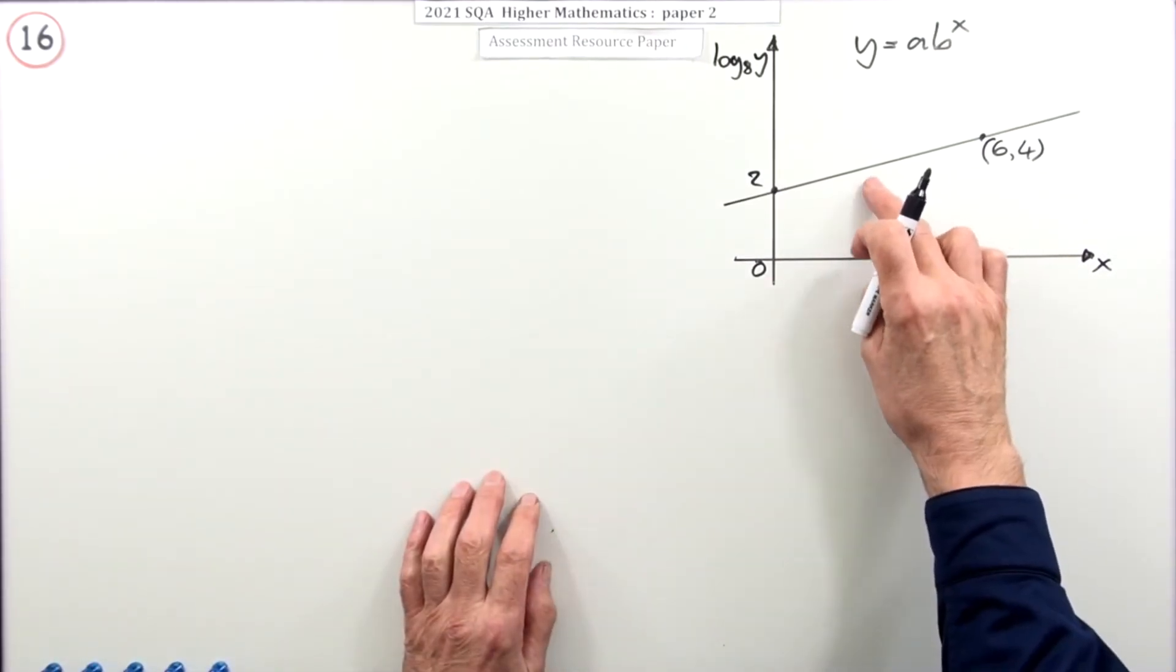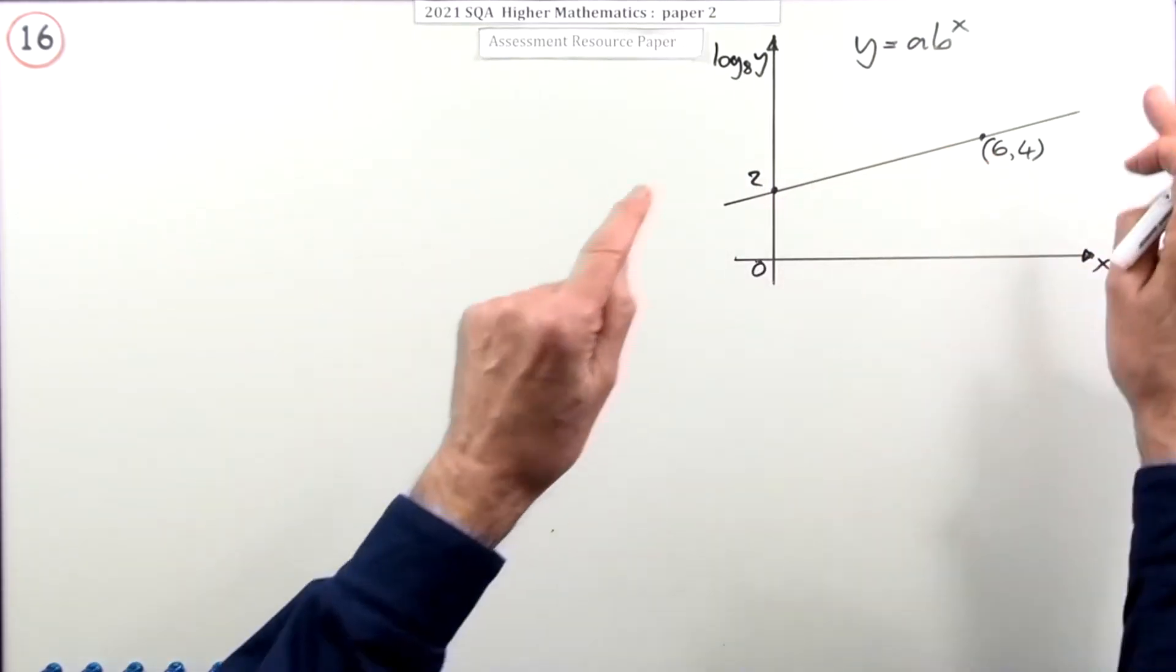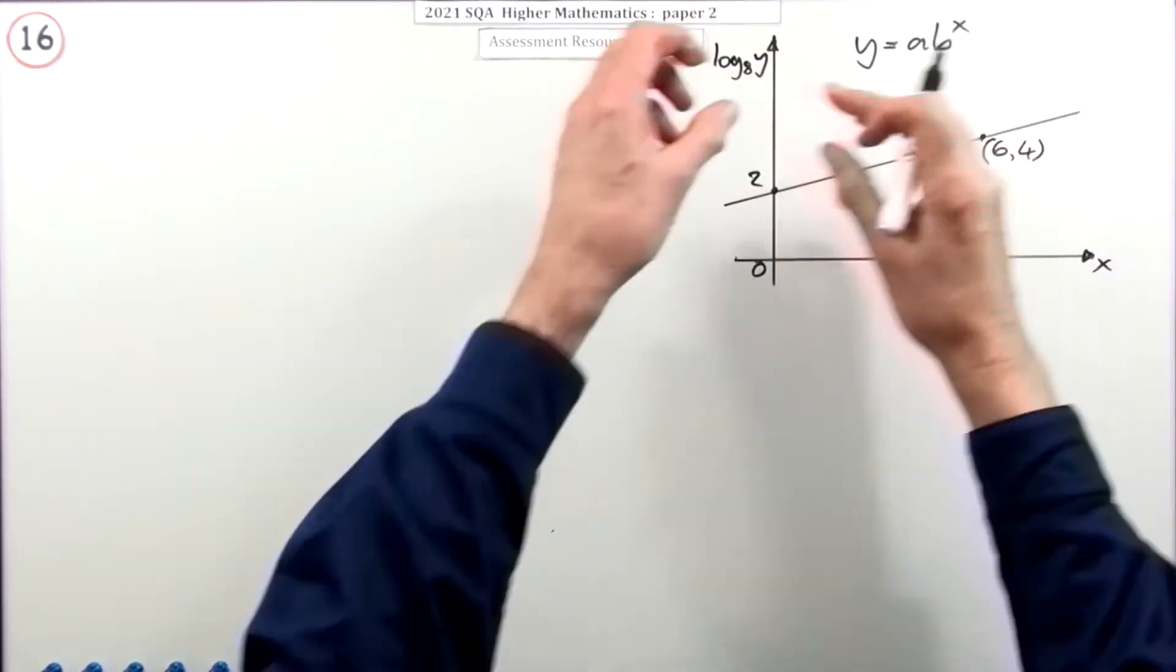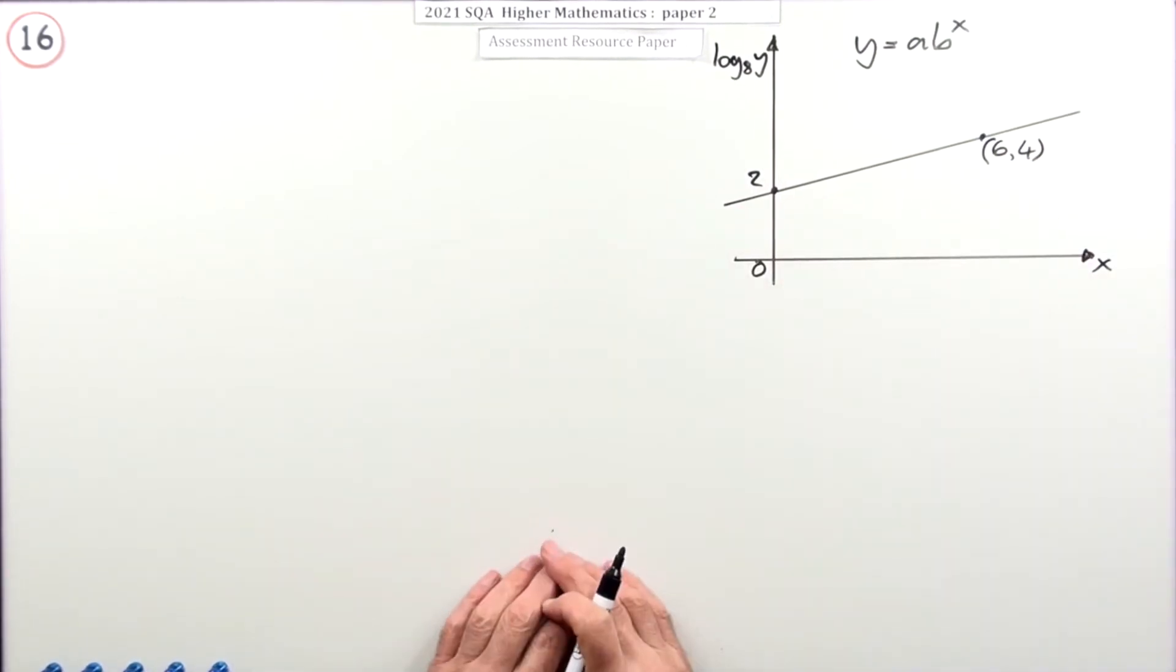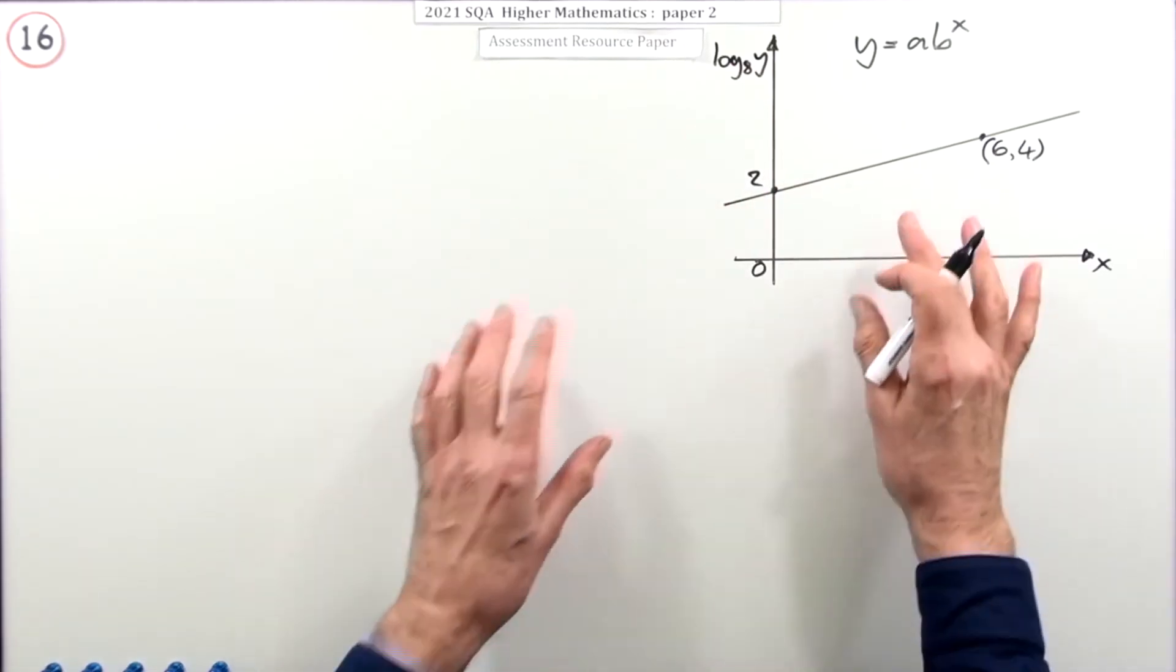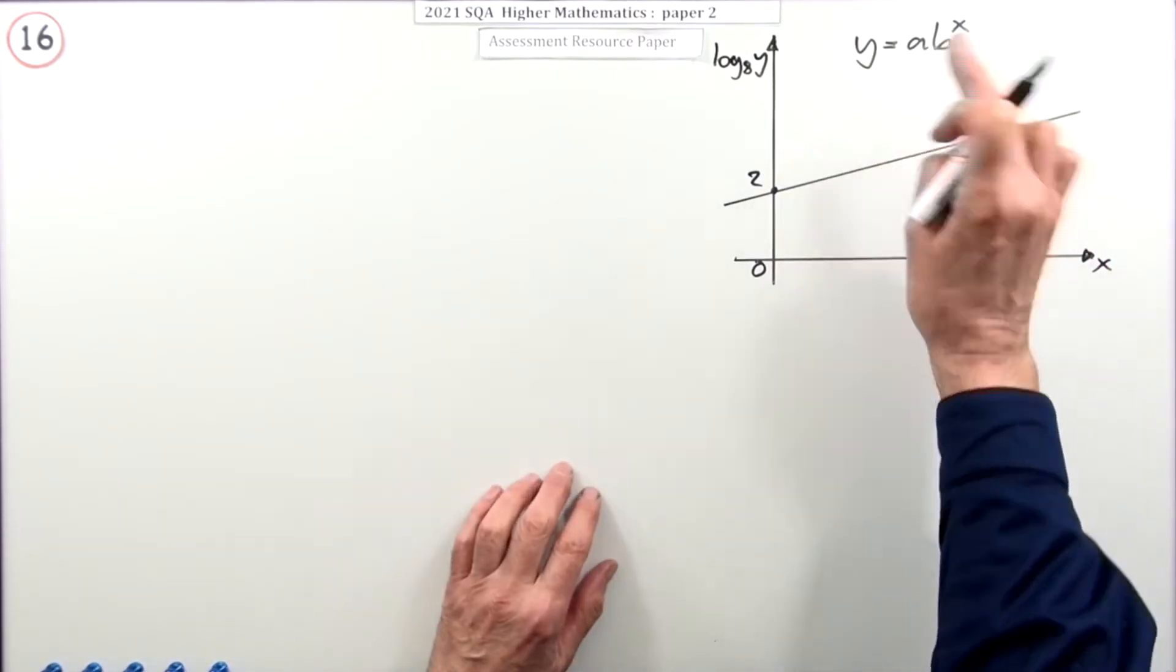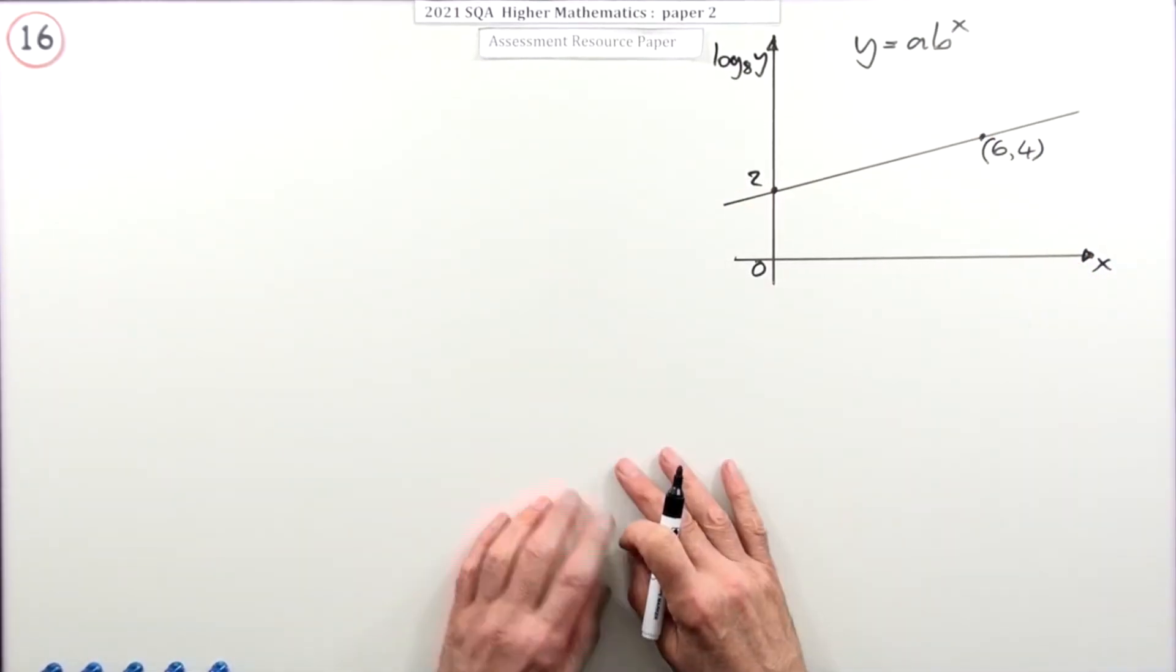Now, the one you'll probably do is the one where you're just going to use the equation of the line, and the difference there would be which way you're going to go. You're going to start with the equation of the line and then gather it back up into this, thereby getting at the values of A and B, or you're going to start with this and expand it out into this equation of a line and compare it with the values on the line. Those are the techniques.